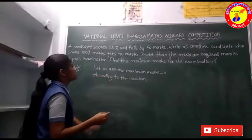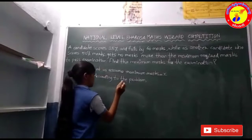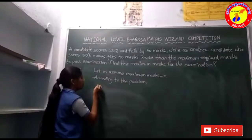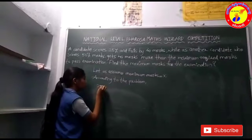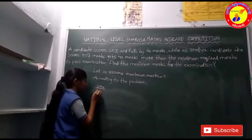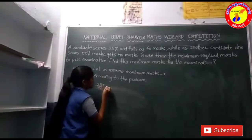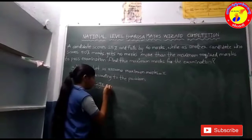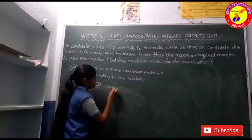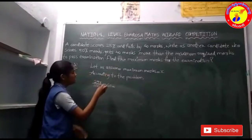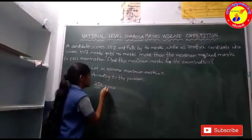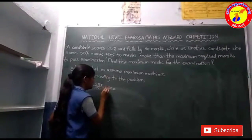So let us take the maximum marks as X. According to the problem, the first candidate scored 25%, so the passing marks equal 25X by 100 plus 60, because he failed by 60 marks — so we should add.